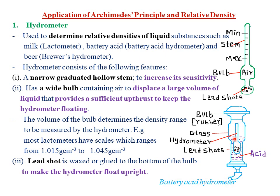This is a typical battery acid hydrometer. Its features include a hydrometer inside, a rubber bulb, a glass stem to safeguard the acid within the container, and lead shots to make the hydrometer float upright.